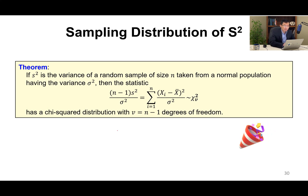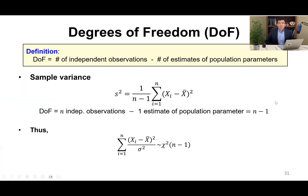We talked about degrees of freedom. Degree of freedom, DOF, is defined as the number of independent observations minus the number of estimates of population parameters. For sample variance, we have n independent observations and one estimate of the population parameter, so the degree of freedom is n minus 1. That is why we use one over n minus 1 instead of one over n.